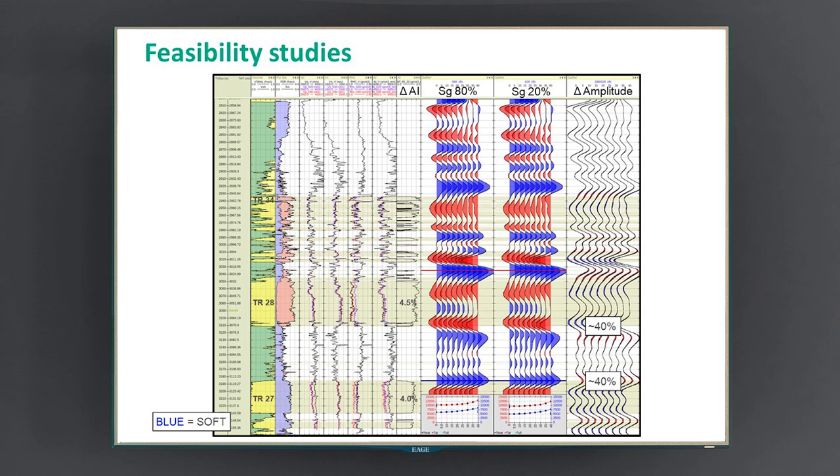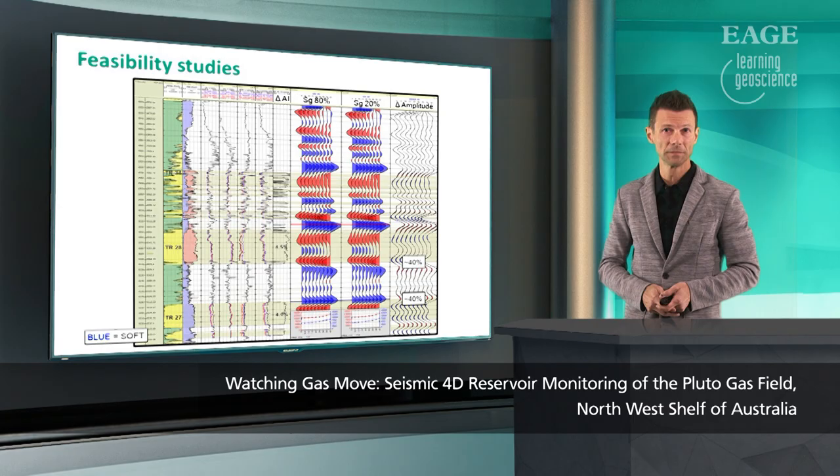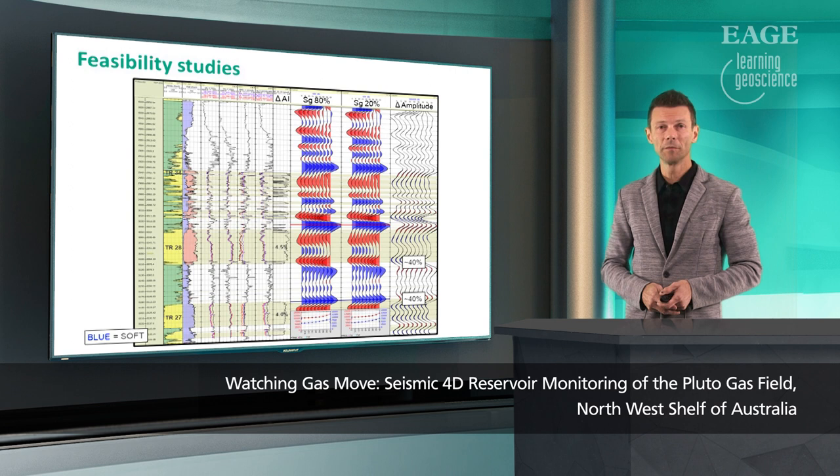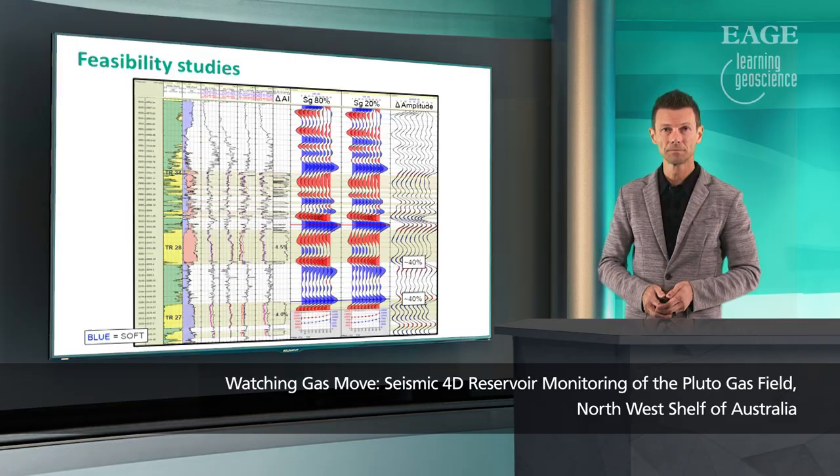At the base of the seismograms, I show an AVO response for brine and gas, and you can see the AVO gradient is hardly changing. That pretty much defines the interpretation strategy for this project, which was based primarily on the full stack, which relies on the redundancy of more traces to suppress more noise.